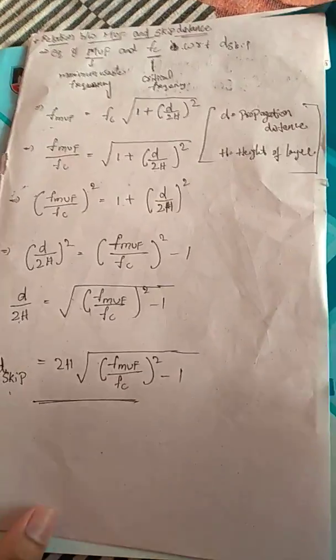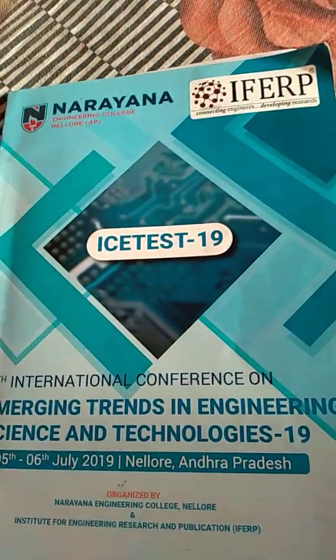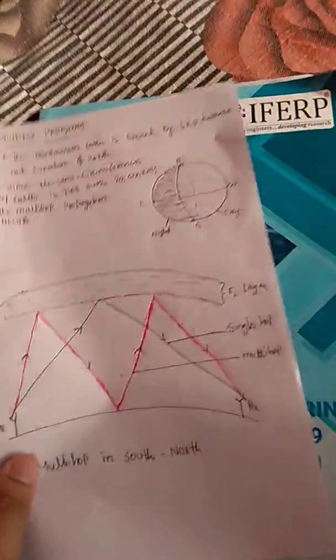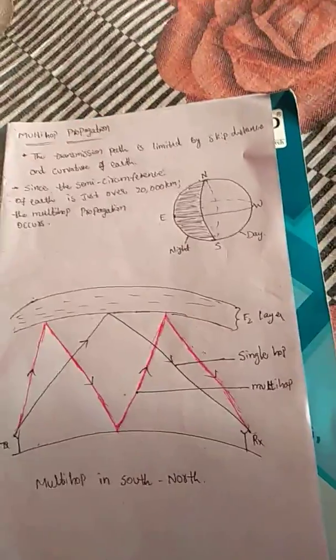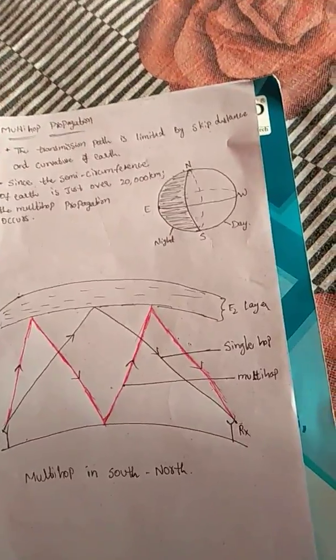That is the expression for skip distance with respect to Maximum Usable Frequency. The next topic is multi-hop propagation.